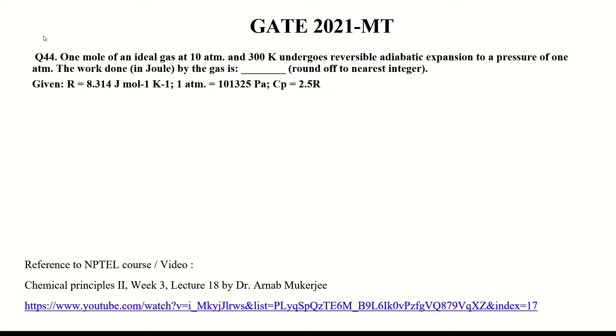The question is as follows: One mole of an ideal gas at 10 atm and 300 K undergoes reversible adiabatic expansion to a pressure of 1 atm. The work done by the gas is to be found. Given: R = 8.314 J mol⁻¹ K⁻¹, 1 atm = 101325 Pa, Cp = 2.5R.